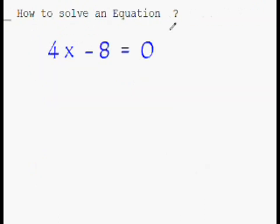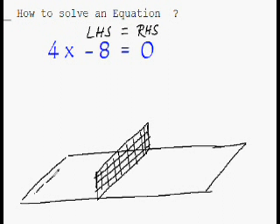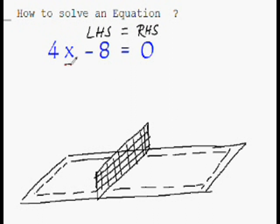So how do we solve an equation? This is a linear equation, and any equation has two sides: LHS and RHS — left hand side and right hand side — like a tennis court with two sides. All the variables live on one side, and all the constants and coefficients live on the other side.